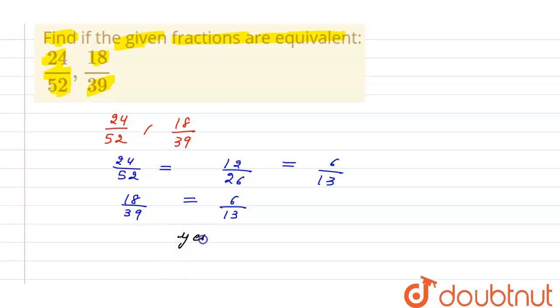The given fractions are equivalent: 24 divided by 52 and 18 divided by 39 are equivalent.